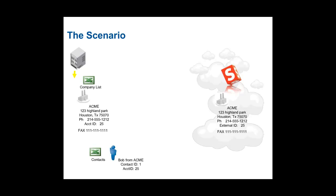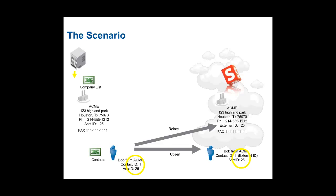In a further example, you may also have a file that contains all of the contacts defined in your billing system. Note that a contact record contains information about the contact, such as the first and last name, as well as a contact ID that uniquely identifies the contact in your billing system. The contact record also contains an account ID, which is used to relate the contact back to an account. When you use Informatica Cloud to upsert the contact data into Salesforce, the contact ID from the billing system is stored on the contact record in Salesforce, and the account ID is used to relate the contact back to the correct account.